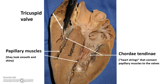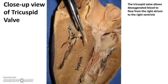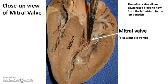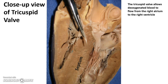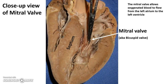The tricuspid valve separates the right atrium from the right ventricle. It has three cusps which prevent backflow of blood after it leaves the right atrium. Here's a close-up: it allows deoxygenated blood to flow from the right atrium to the right ventricle. The mitral or bicuspid valve allows oxygenated blood to flow from the left atrium to the left ventricle.